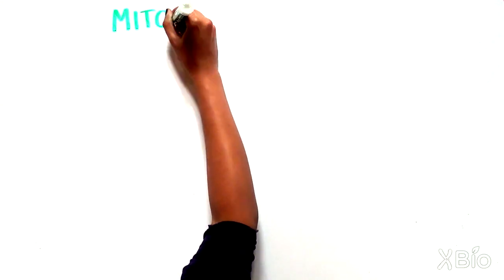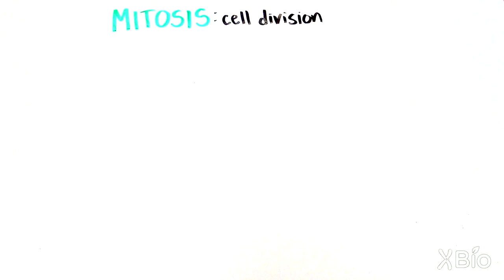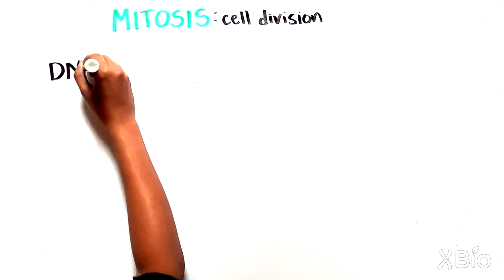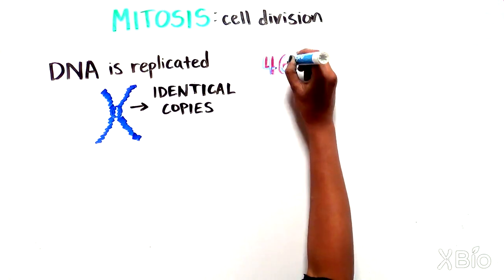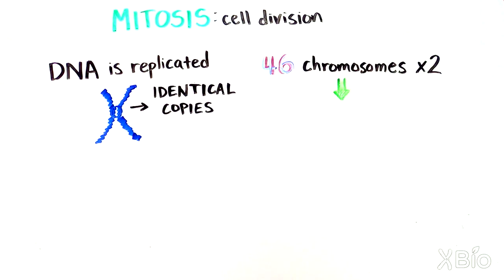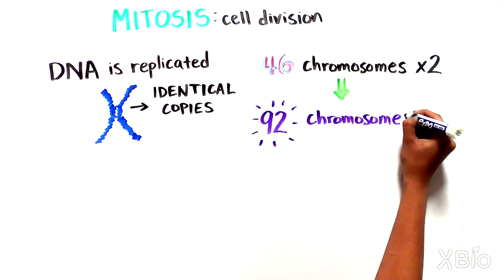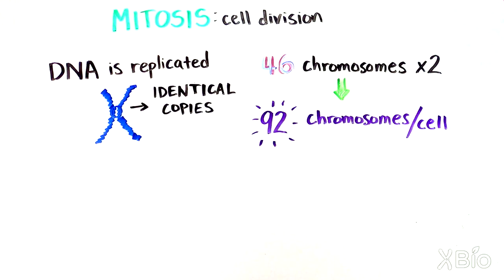Now let's look more closely at this process of cell division, which is also called mitosis. As a cell prepares to divide, each DNA molecule is replicated, resulting in two identical copies of each chromosome. This means that the 46 chromosomes temporarily double to 92 chromosomes in each cell.